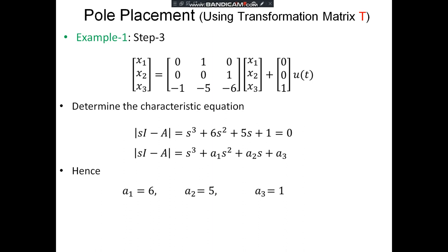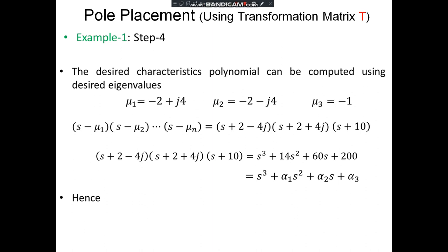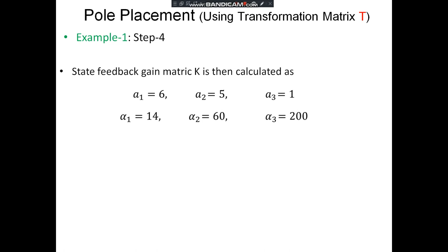The desired characteristic polynomial is computed from the desired eigenvalues: μ₁ = −2 + j4, μ₂ = −2 − j4, μ₃ = −1. This gives S³ + 14S² + 60S + 200, which is compared with S³ + α₁S² + α₂S + α₃. Hence α₁ = 14, α₂ = 60, α₃ = 200. Substituting into the K formula: K = [α₃ − A₃, α₂ − A₂, α₁ − A₁] = [199, 55, 8]. Therefore K₁ = 199, K₂ = 55, K₃ = 8.